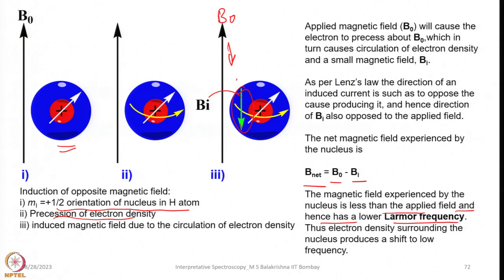In order to cause a transition you have to apply a lower frequency in a direction perpendicular to the applied magnetic field. The electron density surrounding the nucleus produces a shift to lower frequency. As a result, you can compensate for the loss by reinforcing the field so that you keep the lower frequency constant, or you have to bring down the magnetic field strength of B_1 applied orthogonal to B_naught to correspond to the resonance frequency.